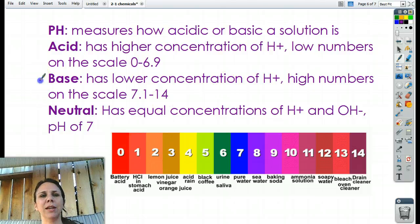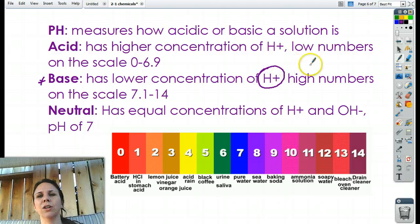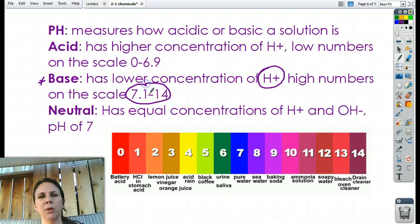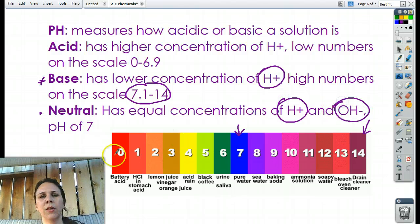Now, a base, on the other hand, is one that has a low concentration of H pluses. So, there's hardly any of them. And on the pH scale, they run between 7.1 and 14. So, Drano, that stuff you're not supposed to touch, that's like really super high. Sodium hydroxide is another one that's pretty nasty. And then we have, right in the middle, neutral, which means it has equal concentrations of the H plus and something called OH minus.